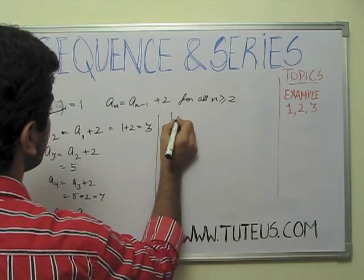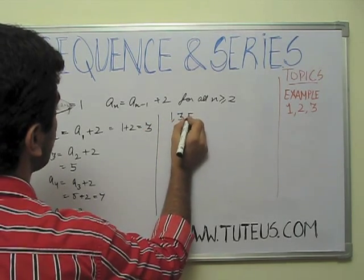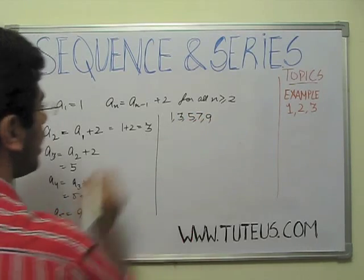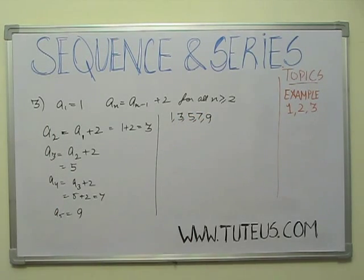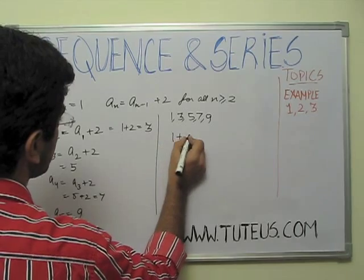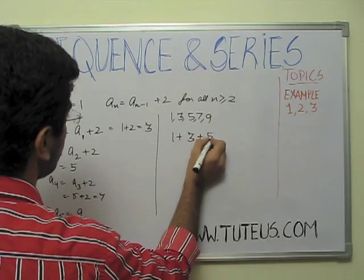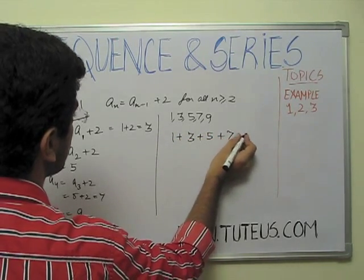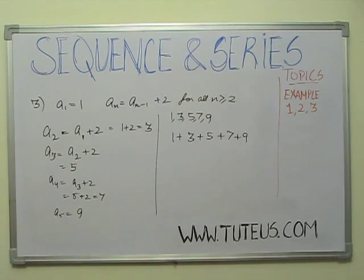He has asked us to write the first 5 terms. The first 5 terms will be 1, 3, then 5, then 7, then 9. And the corresponding series will be 1 plus 3, plus 5, plus 7, plus 9. So, I hope it's clear. Thank you!